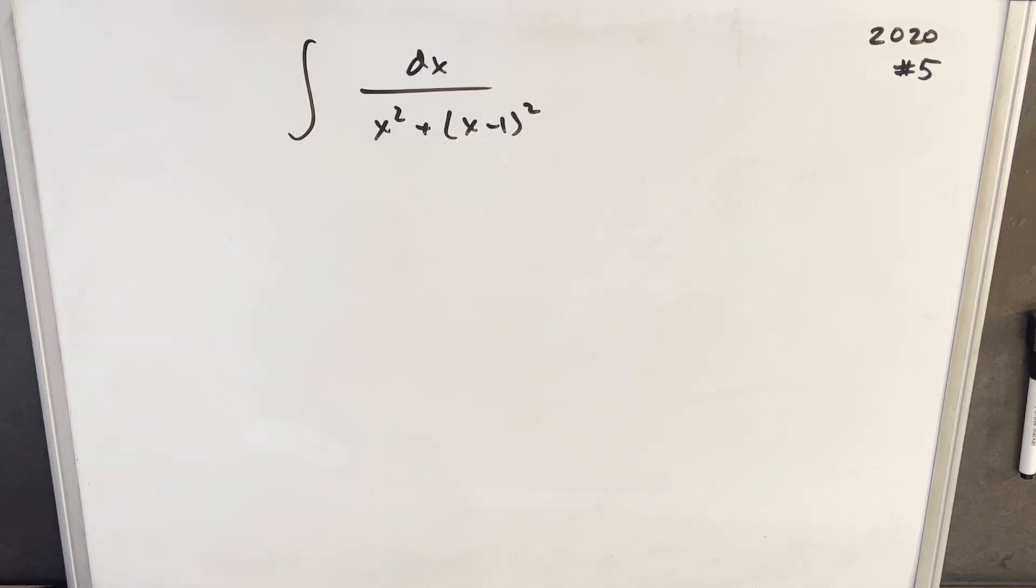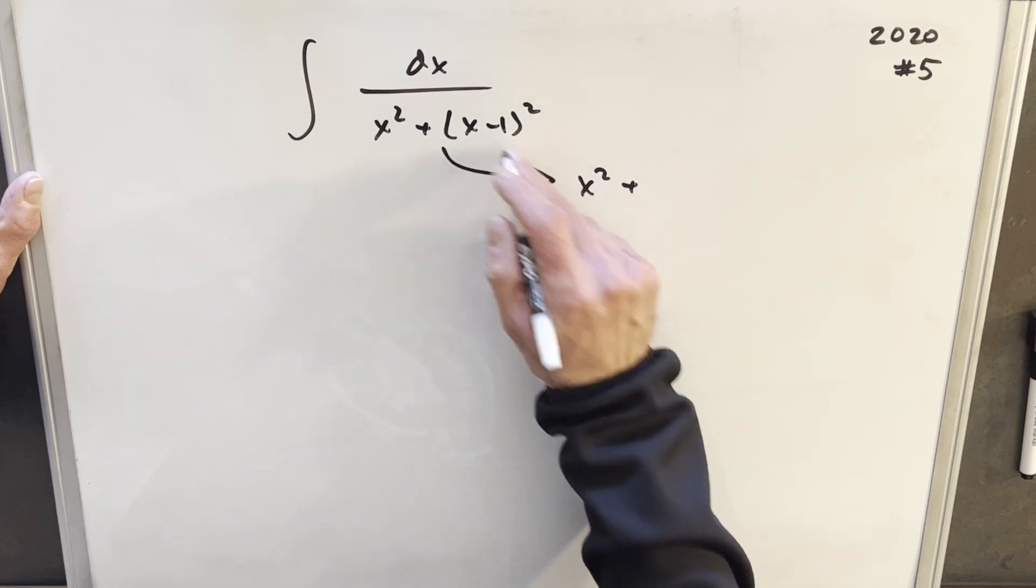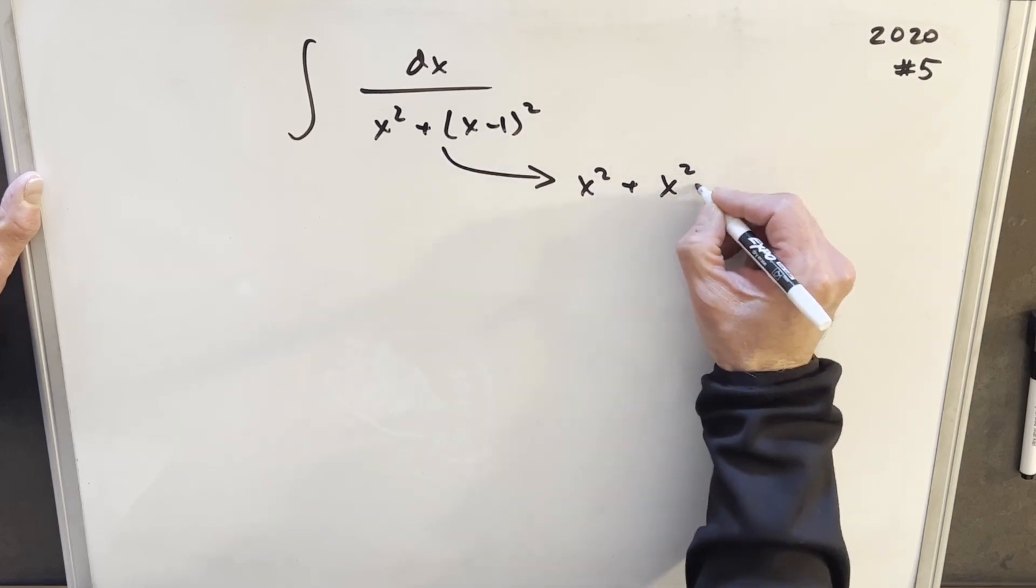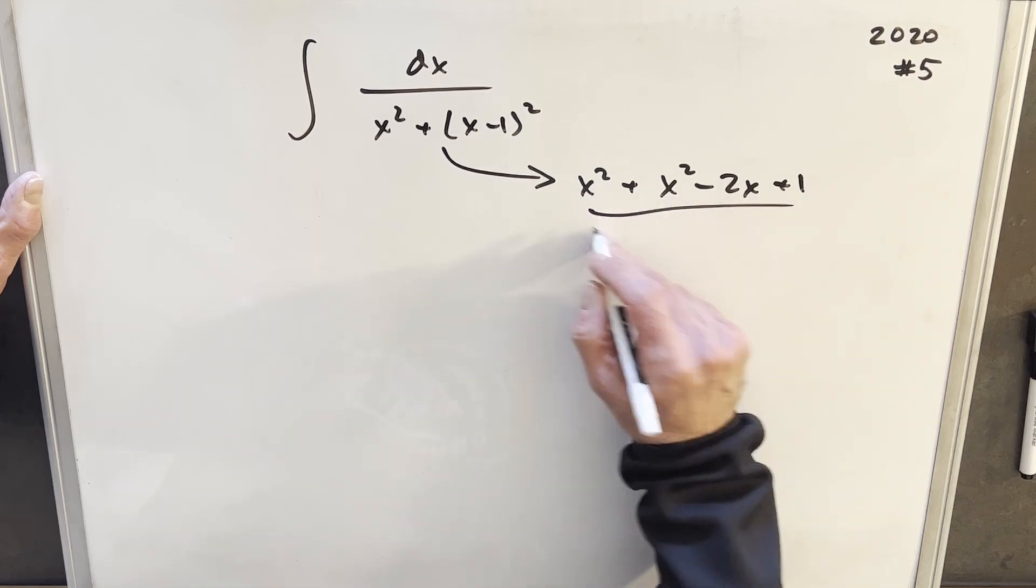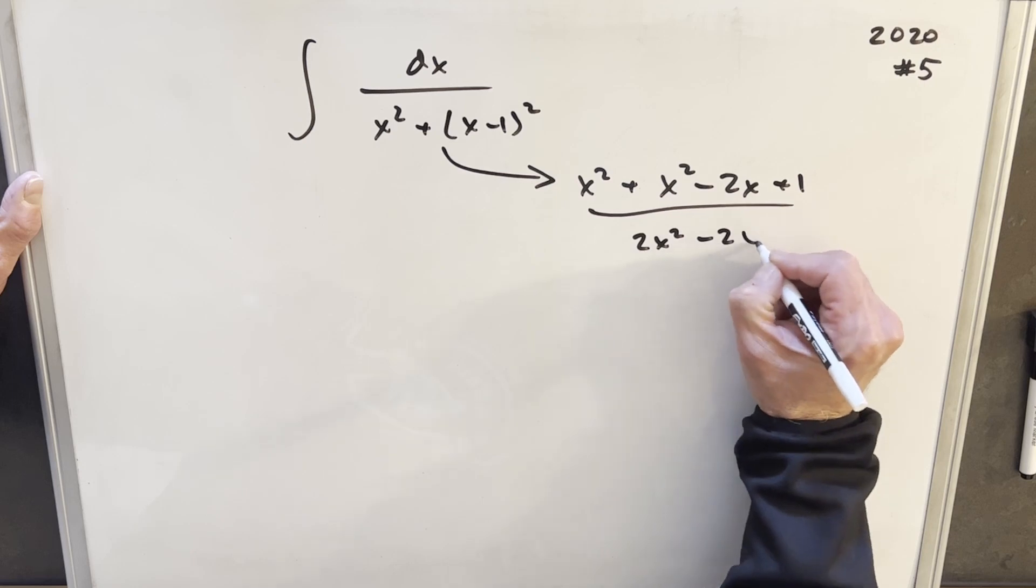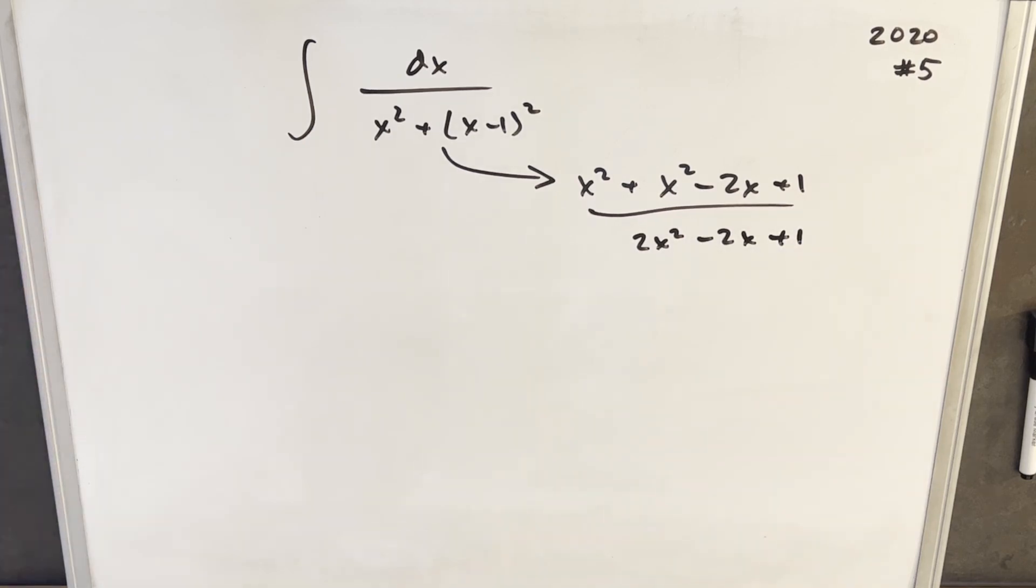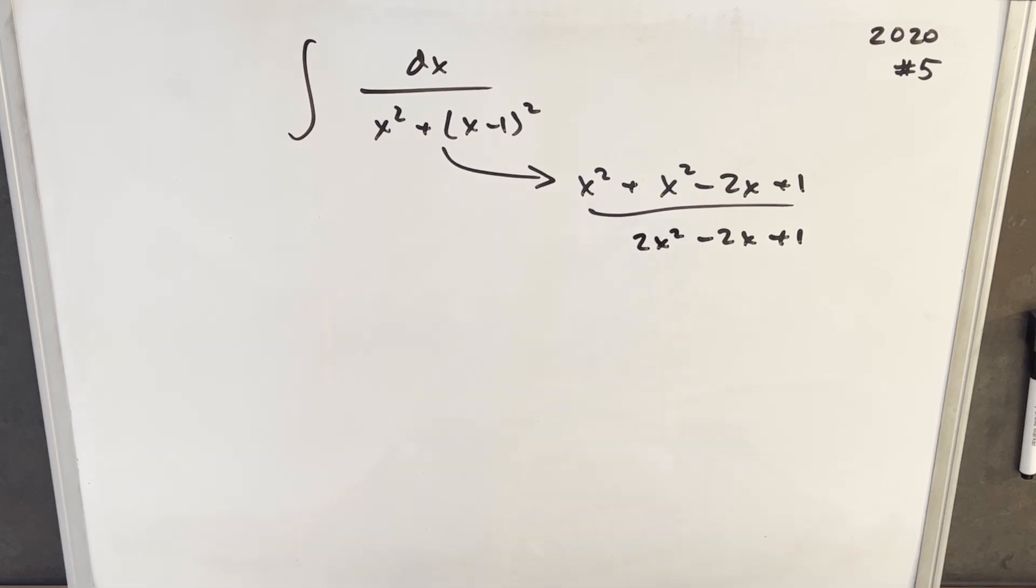What I did was just multiply this out to see what we have. Let's just do the straightforward thing and multiply this out. So we're going to have x squared plus x squared minus 2x plus one. We'll combine the like terms. We have 2x squared minus 2x plus one. Now I'm going to take this and plug it in and start over again.